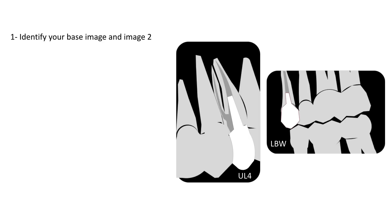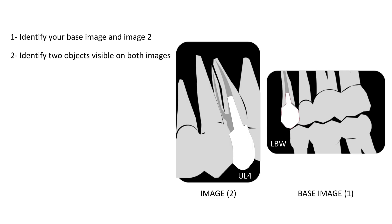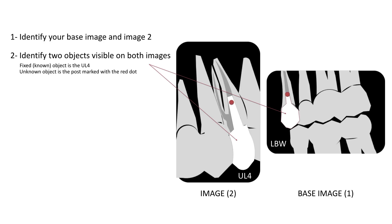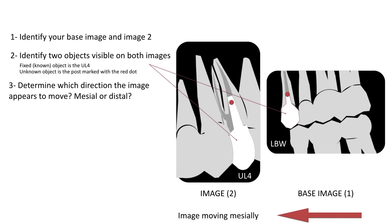You need to identify one image as your base. In this example, the bitewing is our base and the periapical is image two. We need to select two objects visible on both images — one has to be fixed and the other is the unknown, the one we need to find the position of. Here, upper left four is the fixed one and the red dot marks the post crown as the unknown. Now we need to determine which direction the images appear to move — image two appears to move mesially from image one, because in image two we are now seeing upper left two and three, which were not visible in image one.